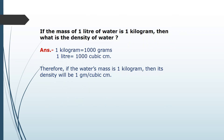If the mass of 1 liter of water is 1 kilogram, what is the density of water? 1 kilogram equals 1000 grams, and 1 liter equals 1000 cubic centimeters. Therefore, if the water's mass is 1 kilogram, its density will be 1 gram per cubic centimeter. The density of water is 1 g/cc.